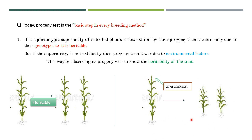On the other hand, if you see that its progeny is dwarf, that means this tallness is not going to be inherited — your selection was wrong, and that plant which you selected was tall due to an environmental cause. For example, suppose you gave more nutrients to that plant and it grew tall. By observing whether the trait is being inherited or not in the progeny, you can conclude the heritability of the trait you have selected.